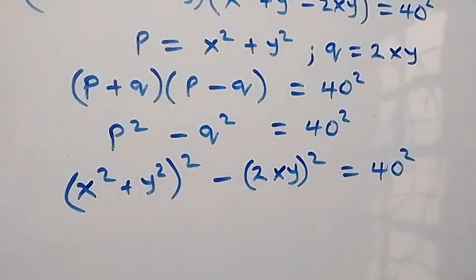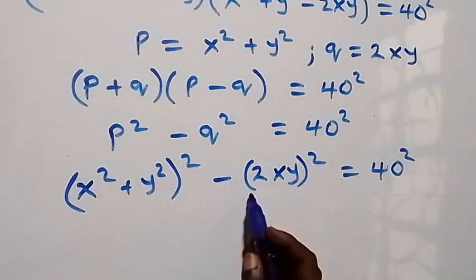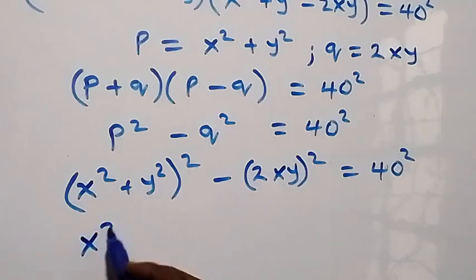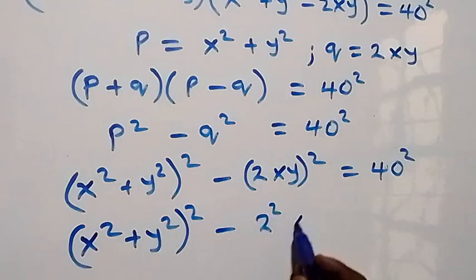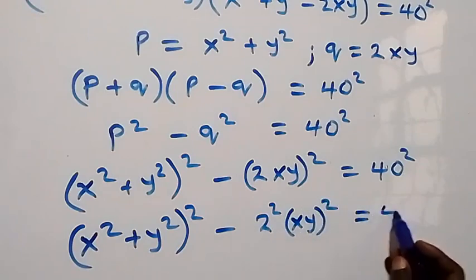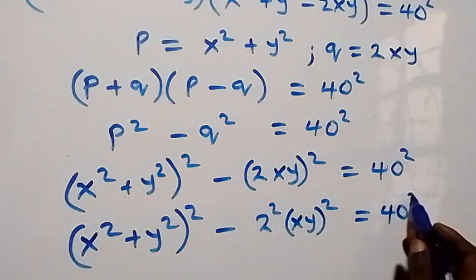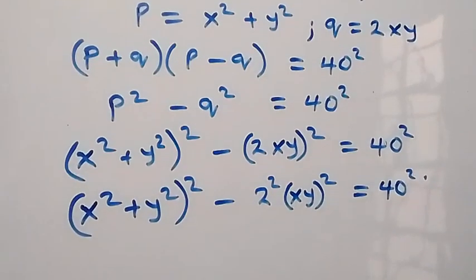This square will affect 2 and xy, so we have (x squared plus y squared) all squared minus 2 squared times (xy) squared equals 40 squared. From equation 2, xy equals 99, so let's bring that in: we have (x² + y²)² minus 4 times 99 squared equals 40 squared.